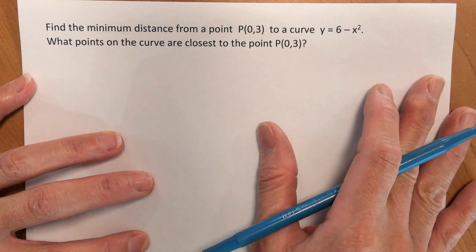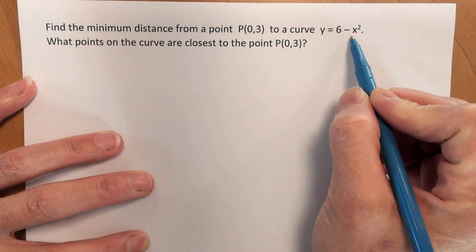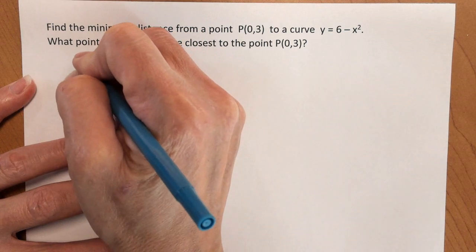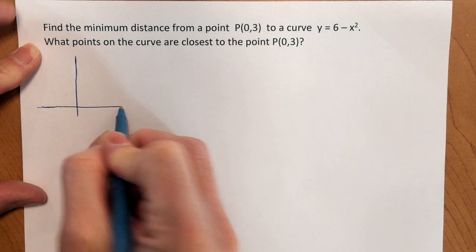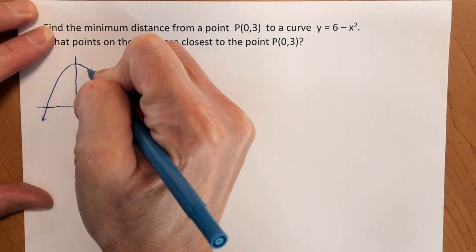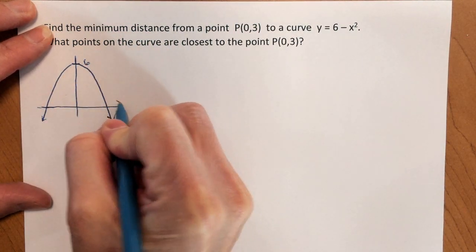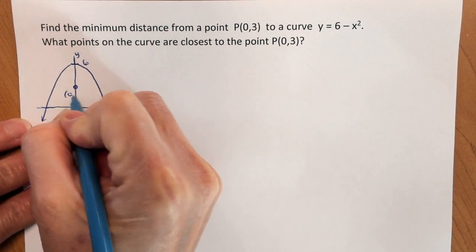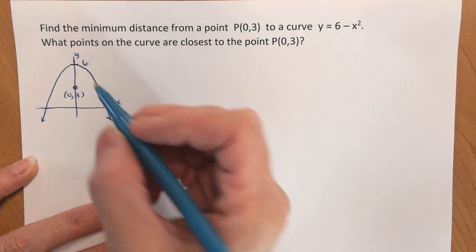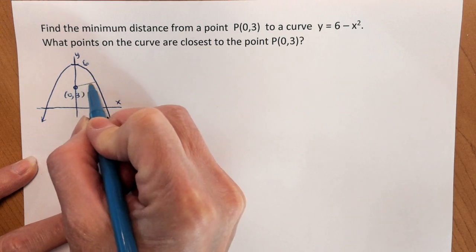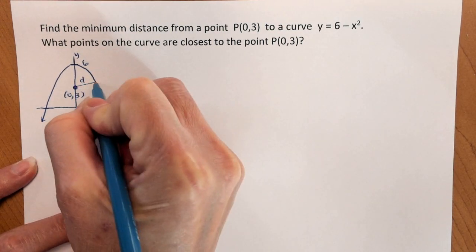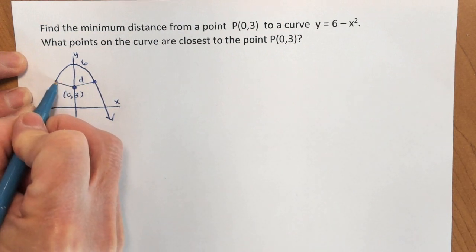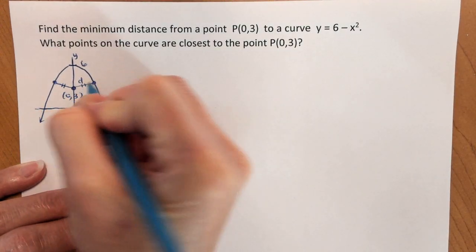First let's draw a picture of the curve and the point. This is a parabola facing downwards from the negative x squared, and it's shifted 6 units up. So the vertex is going to be at (0, 6). The point (0, 3) is on the y-axis, halfway between the x-axis and the vertex. It looks like there's going to be two answers because the parabola has symmetry, and there's going to be a point on either side of this parabola where the distances are equal to the point (0, 3).